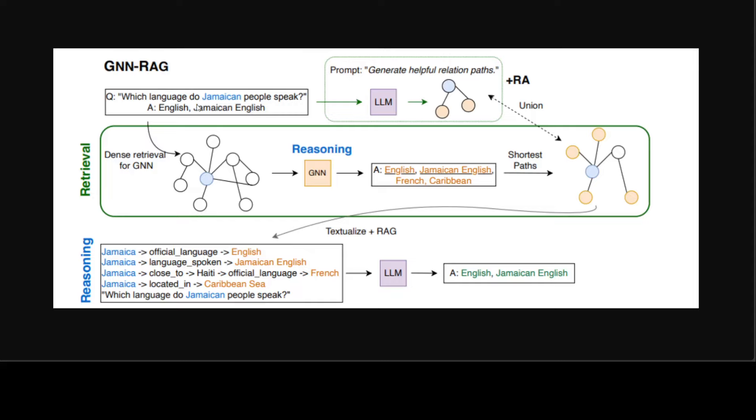So if the question is which language do Jamaican people speak and there are two answers English and Jamaican English. Then it is given to LLM and the prompt is to generate helpful relation paths from the graph. From there the retrieval augmentation is done with reasoning.